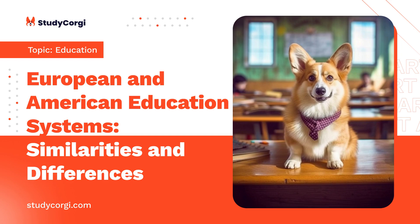Based on the World University Rankings Report of 2010–2011, the United States has the most of the world's best institutions of higher learning. These institutions have produced the best professionals in various fields. It is also important to note that the best researchers work in these institutions. Educators in United States universities are able to provide quality education to students compared to other universities across Europe. The ranking shows that the best universities are in the United States and Europe.